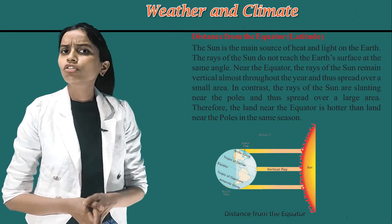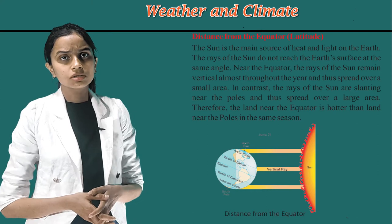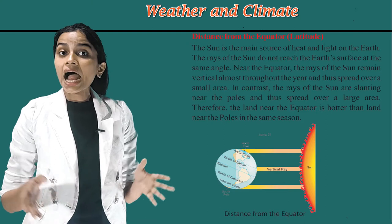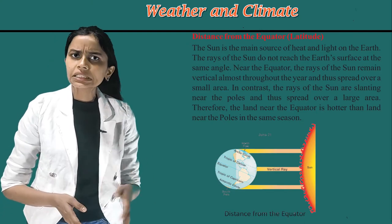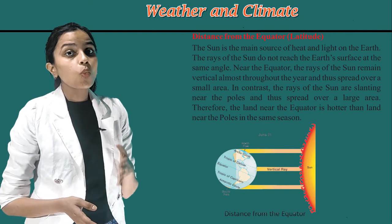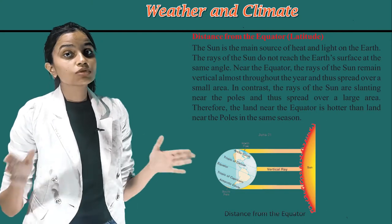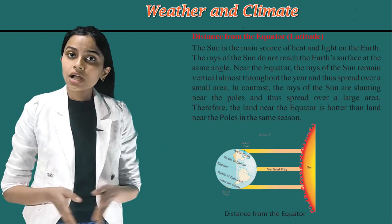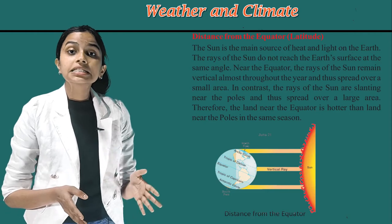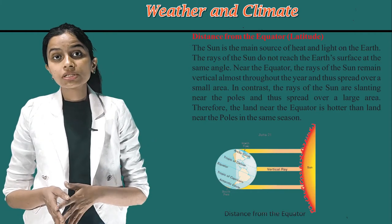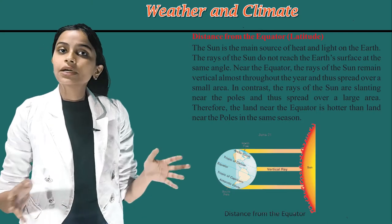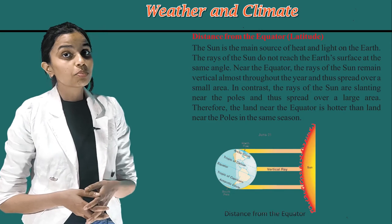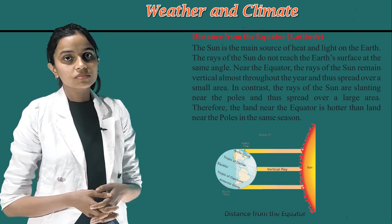The sun is the main source of heat and light of the earth. The rays of the sun do not reach the earth's surface at the same angle. Near the equator, the rays of the sun remain vertical almost throughout the year and spread over a small area. In contrast, the rays of the sun are slanting near the poles and spread over a large area. Therefore, the land near the equator is hotter than land near the poles in the same season.